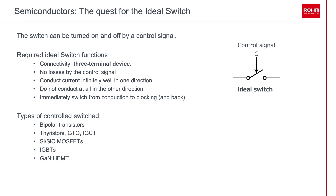As a semiconductor design and manufacturer, we are in search of creating the ideal switch. A switch is turned on and off, similar to a light switch. Since semiconductors use current and voltage to turn the switch on and off, we want to make these switches as efficient as possible. So what's required for an ideal switch? It has to be a three-terminal device. We want no losses by the control signal, and we want it to conduct current indefinitely in one direction, but not conduct at all in the other direction.